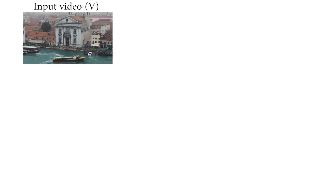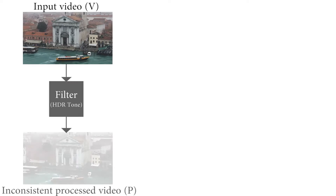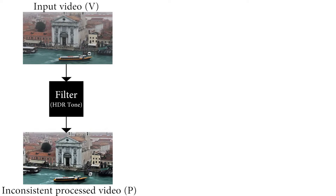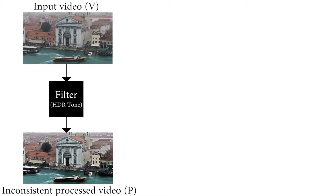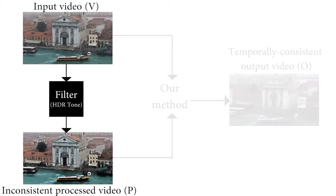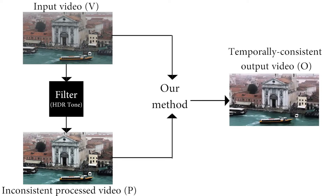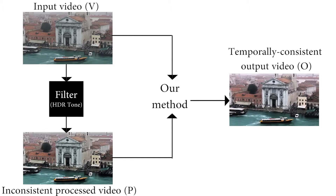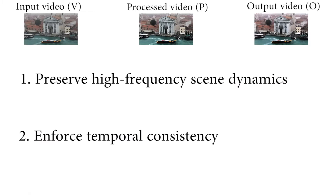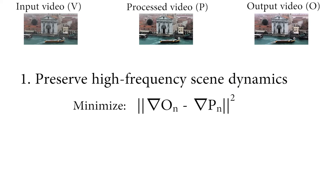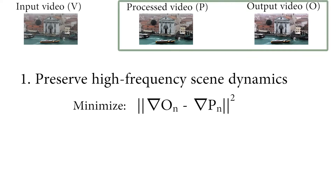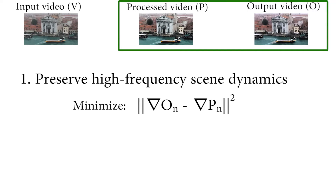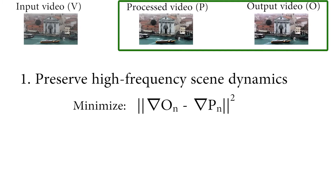As input we take an original video plus the output of a frame-by-frame processing of the video using an off-the-shelf technique. We treat the underlying processing algorithm entirely as a black box. Our formulation has two parts. The first, inspired by works on image reconstruction from edges, preserves high-frequency scene dynamics. We maintain that the edges of the output, approximated as gradients, are close to the gradients in the processed image.